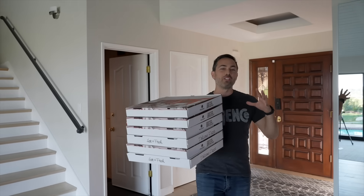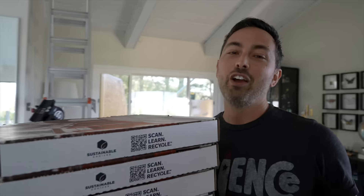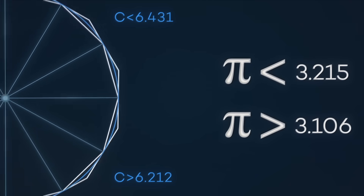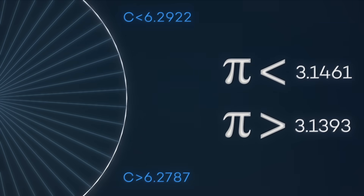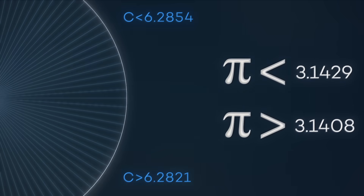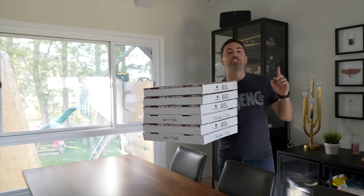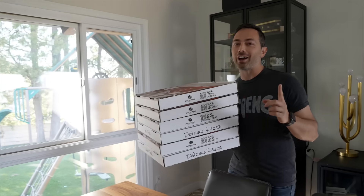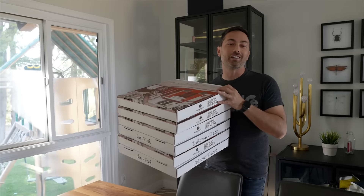This video is about the ridiculous way we used to calculate pi. For 2,000 years the most successful method was painstakingly slow and tedious. But then Isaac Newton came along and changed the game. You could say he speed ran pi, and I'm going to show you how he did it.